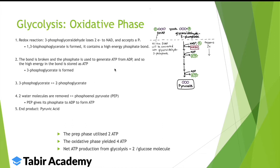The high-energy phosphate bond in 1,3-bisphosphoglycerate is used to generate ATP — the phosphate bonds with ADP, and the energy released is stored in ATP. The molecule then becomes 3-phosphoglycerate, because the 1-position phosphate is gone. 3-phosphoglycerate is then converted into 2-phosphoglycerate.